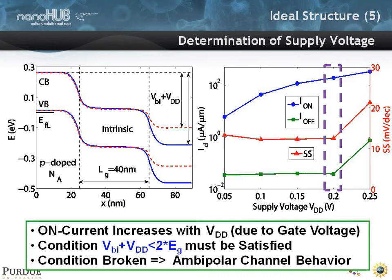We can play with the supply voltage to help with that. On the plot on the right, the on current, the off current, and the sub-threshold swing are being plotted. As you ramp up the supply voltage, the on current increases by an order of magnitude from 0.5 to roughly 0.2, and the off current, shown in green, is roughly flat.